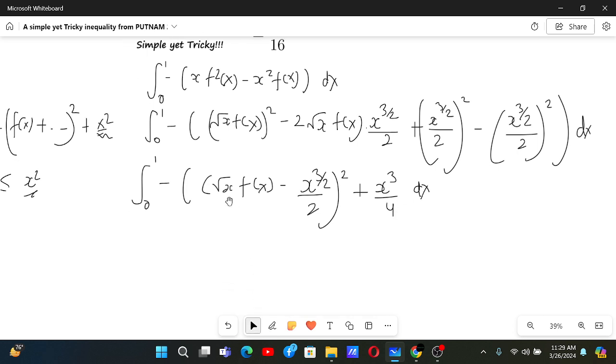Now we know that since this square term is always positive and because there is a minus sign, this is always negative. So maximum value of this is just 0, because the maximum value of a non-positive number will of course be 0. That's why this is less than or equals to 0 to 1 of x cubed by 4 dx, and this is x to the power 4 by 16 from 0 to 1, and that is 1 by 16.